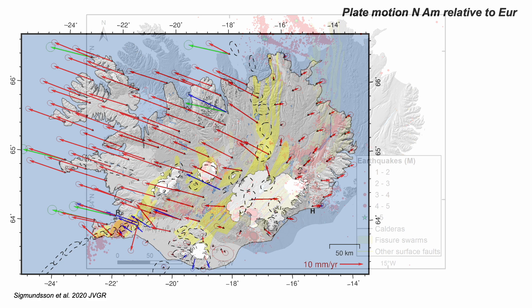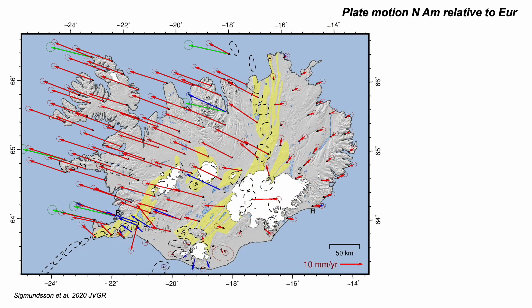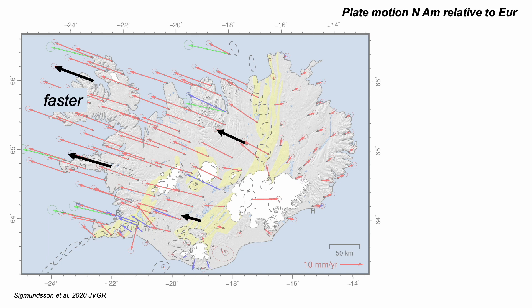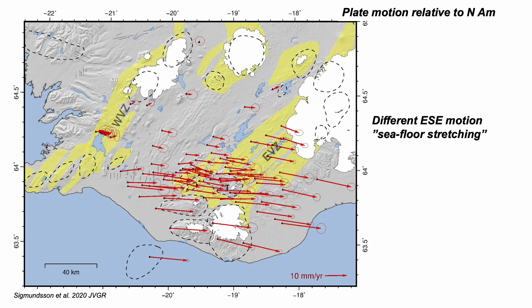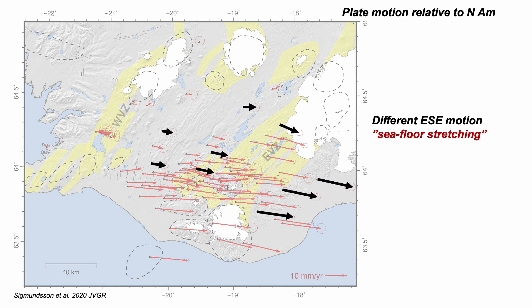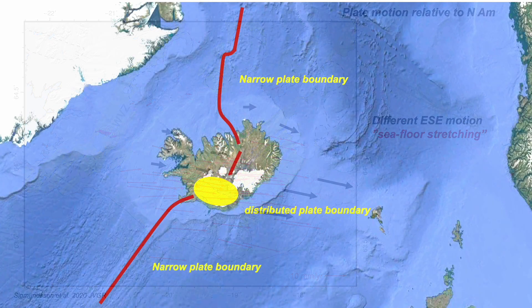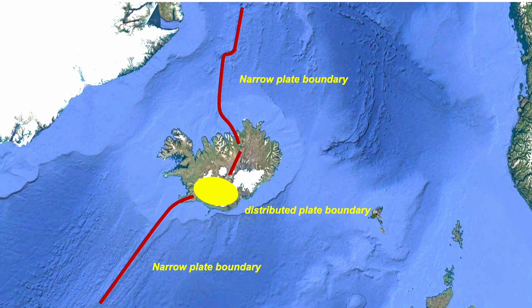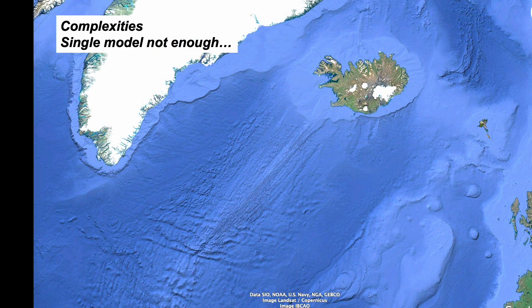Looking at actual plate motions recorded by repeated GPS surveys, keeping the east side fixed, the west side moves off to the west-northwest. If all this relative motion happened in a narrow zone, these arrows should be the same length — but they're not. This variation is even more dramatic on the south side of Iceland. Iceland is stretching apart, not simply along a narrow zone. So the plate boundary here is a broader zone of plate stretching — that's not predicted by the simple model.